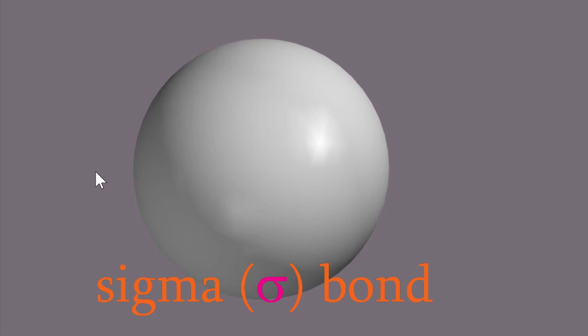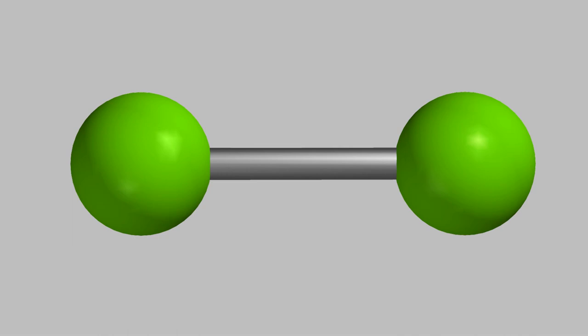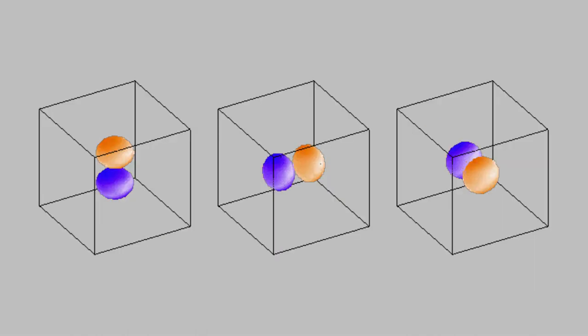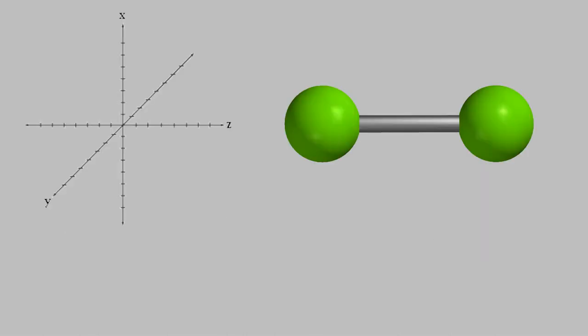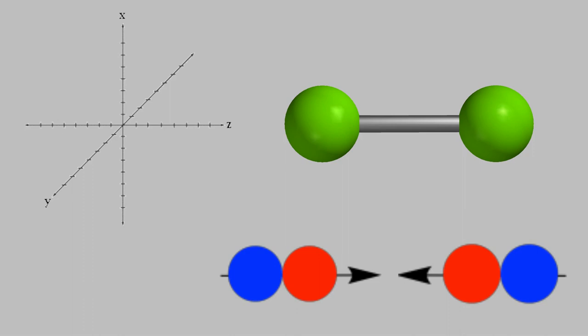It might seem as though only bonds made of s orbitals will look circular, but it turns out that other types of orbitals can also make circular-looking bonds. For example, suppose we have a chlorine molecule, Cl2. The bond is made from two overlapping p orbitals. You might remember that there are three different p orbitals, each of them pointing along a different axis. These are definitely not round, but here's what happens in a chlorine molecule.